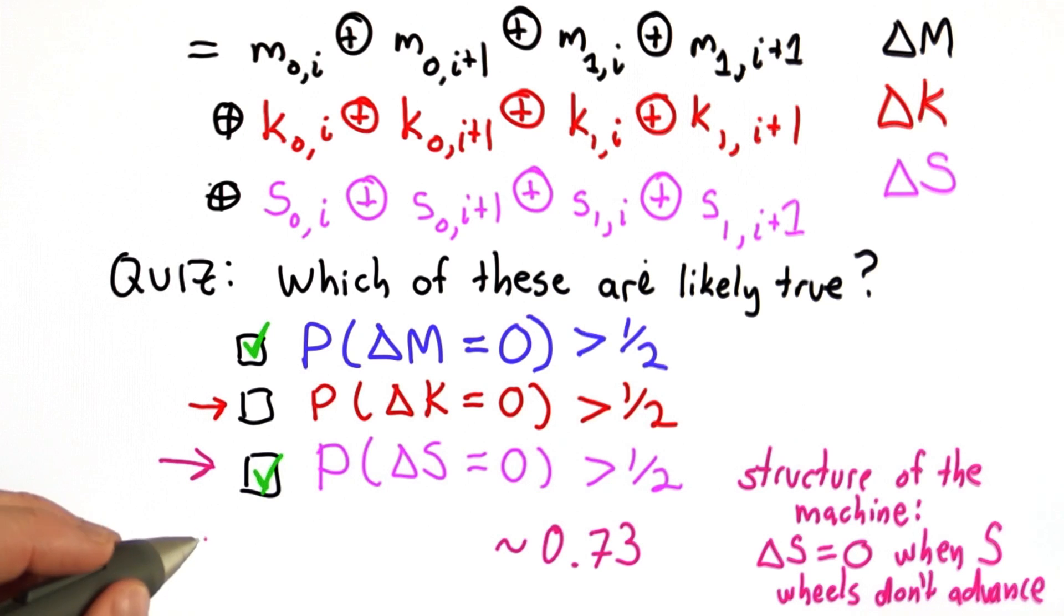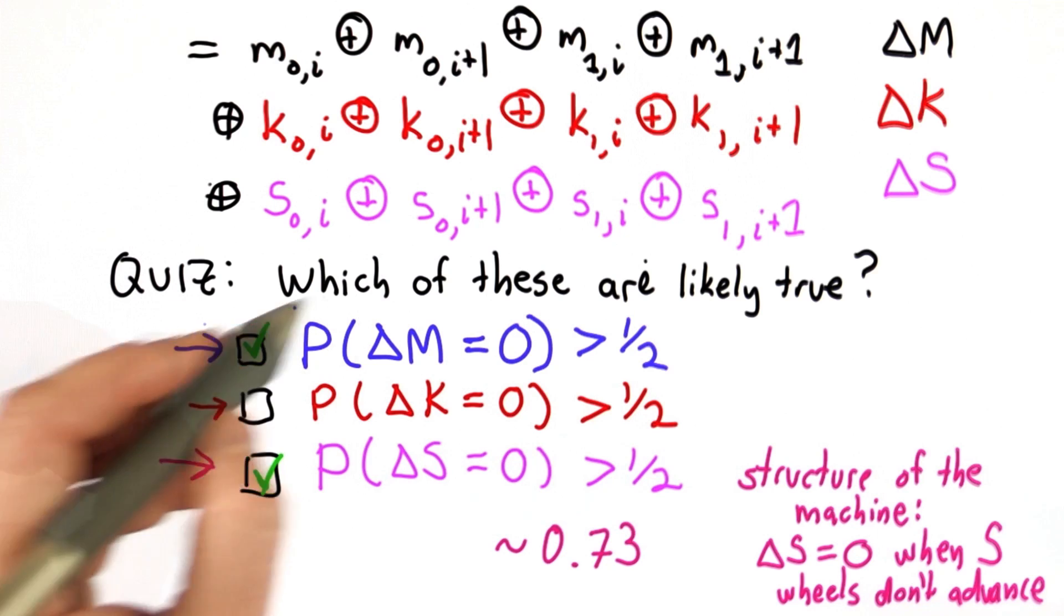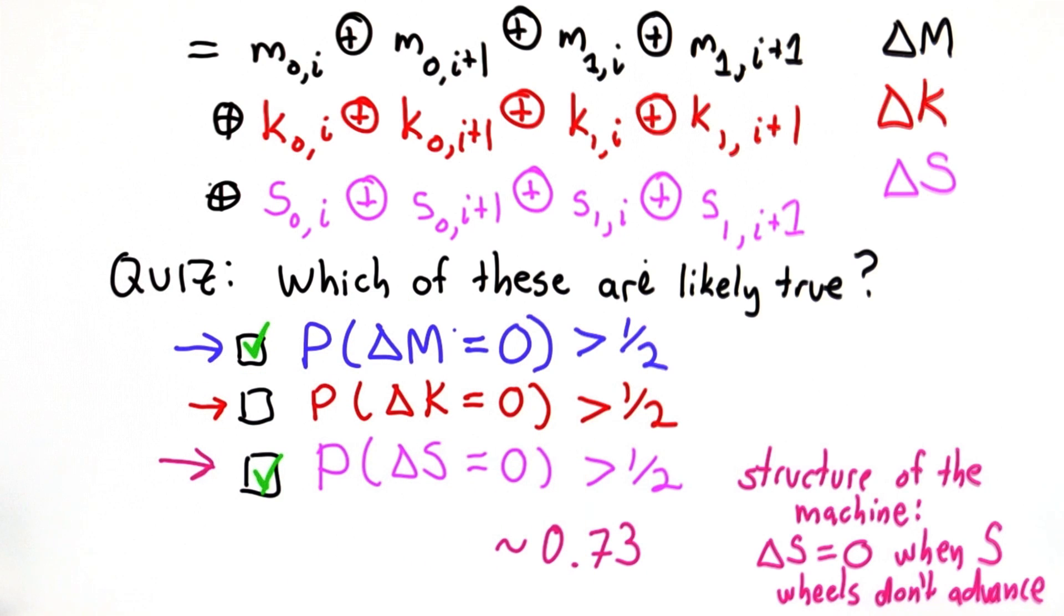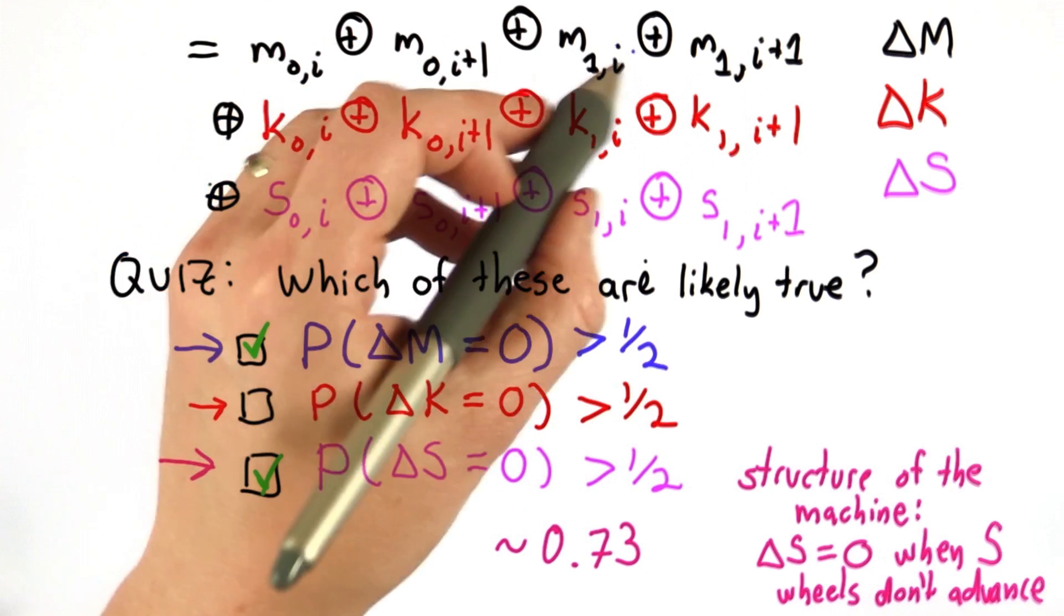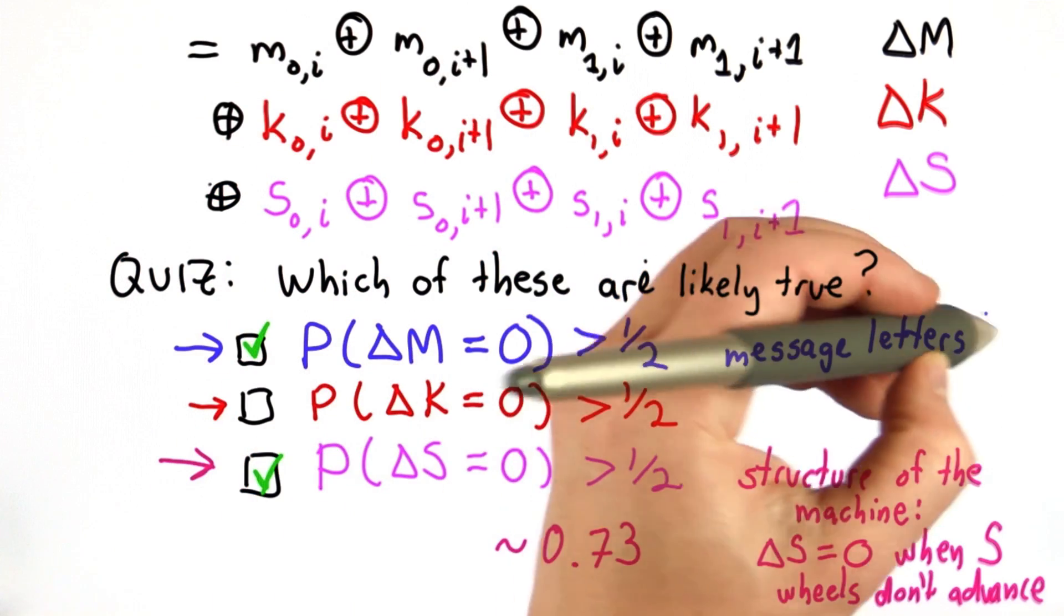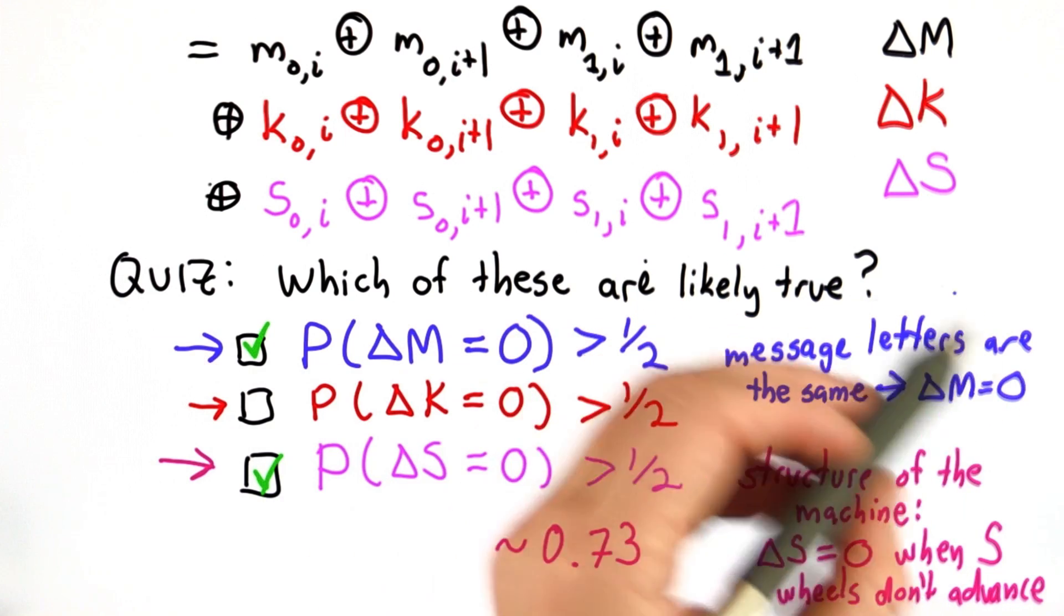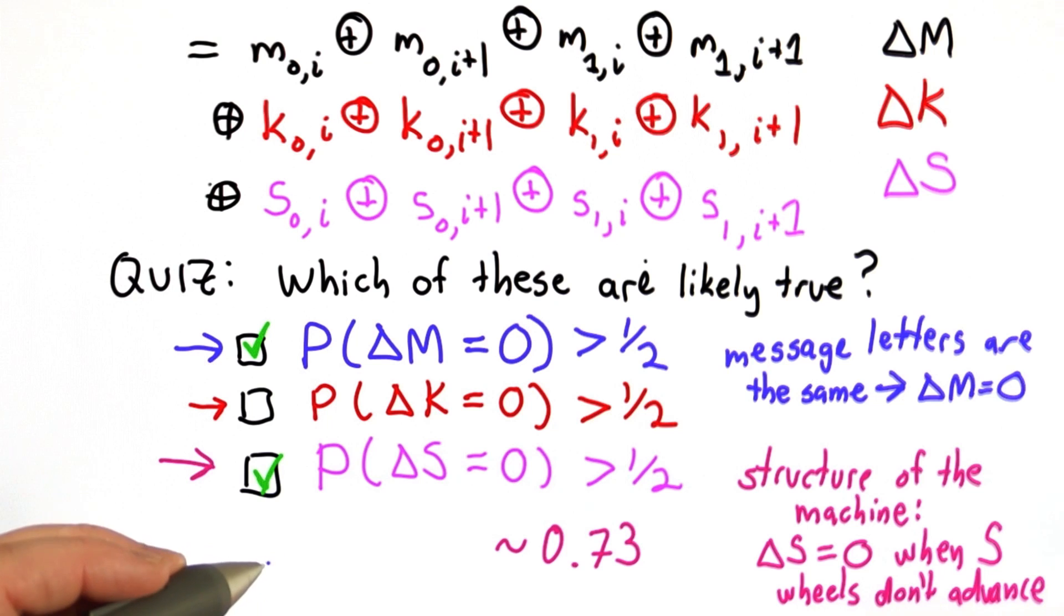Getting the first one right required a little more linguistic insight. And the reason this is greater than 1/2 depends on subsequent message letters. And if adjacent letters in the message are the same, that ensures that delta M is equal to 0. And it turns out that this is a property that many languages have.